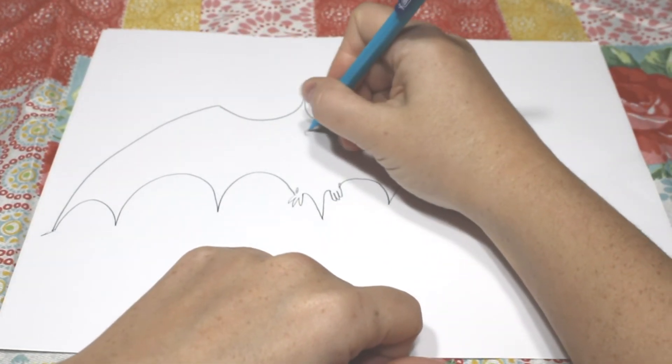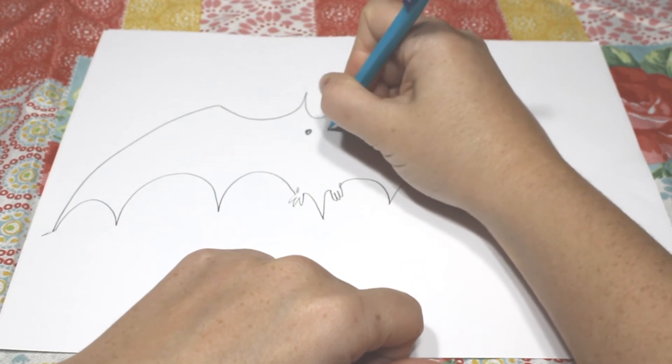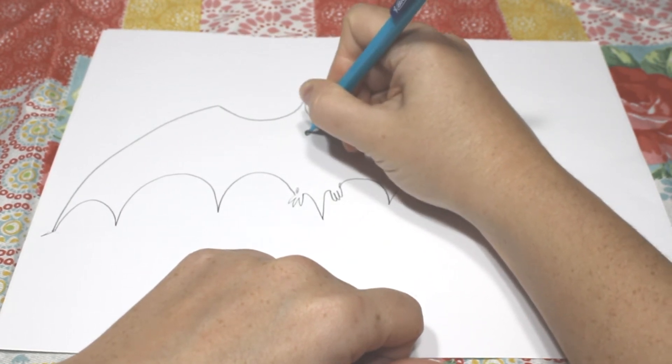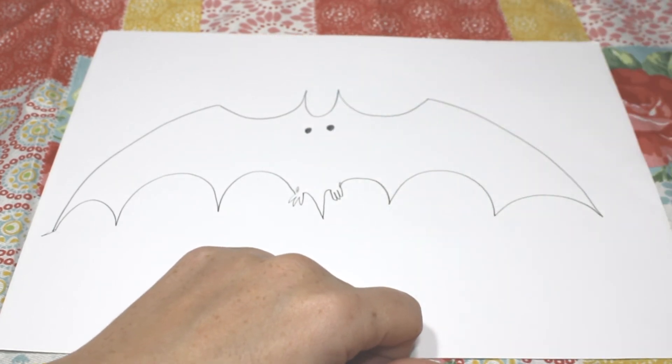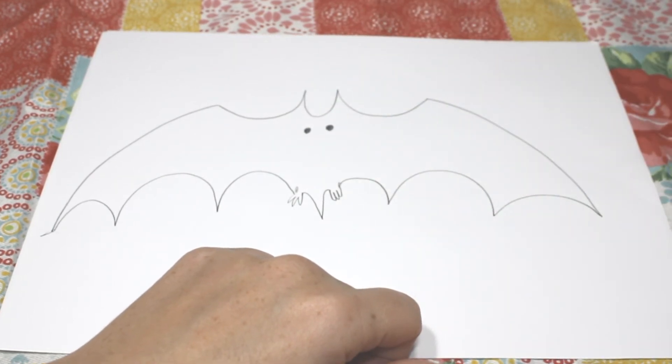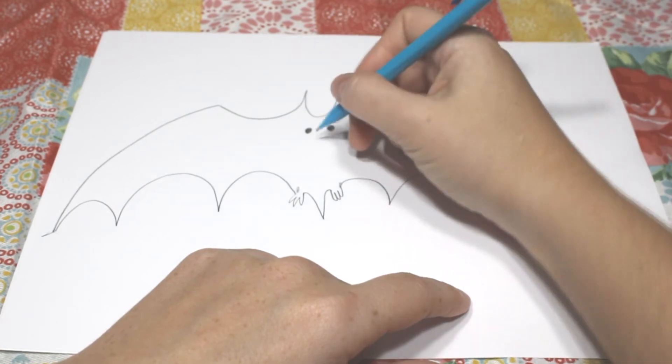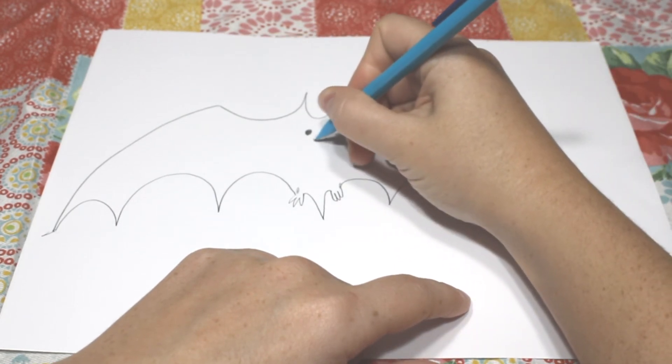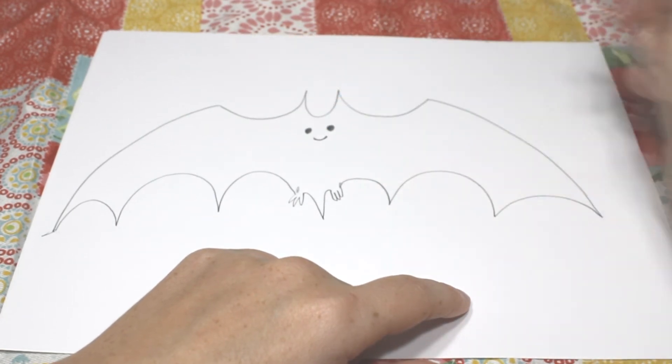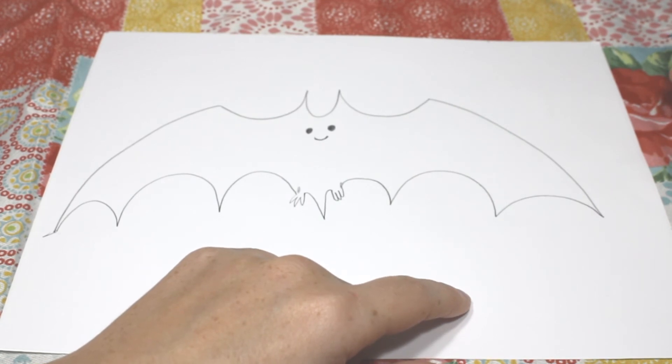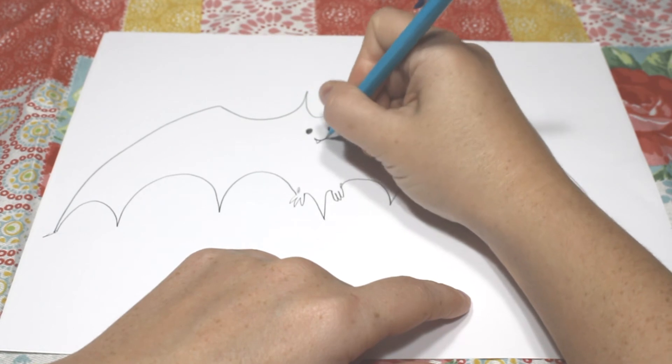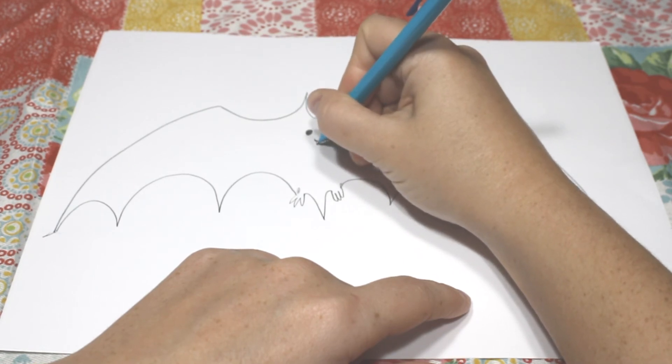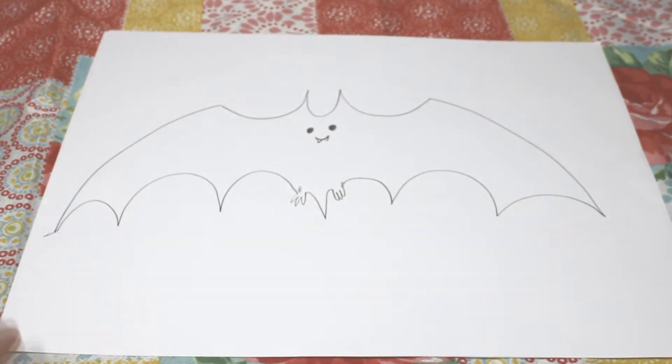Okay, now for the bat's face, we're going to put a circle here, and a circle here. We're going to put a little smile. He's a happy bat. And two little teeth. One, two. So cute.